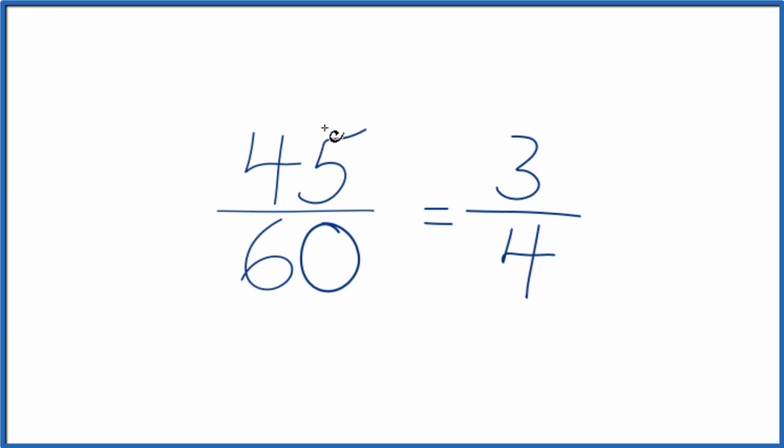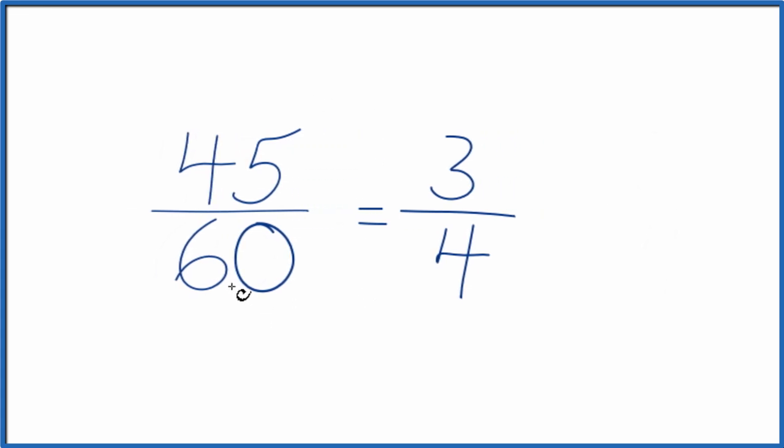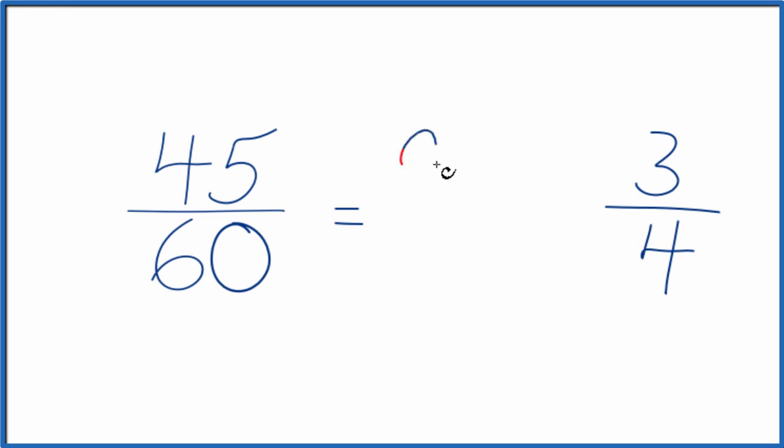And if you didn't know that 15 went into 45 evenly and 60 evenly, you could divide 45 by 5 and then 60 by 5. 45 divided by 5 is 9 and 60 divided by 5 is 12. And then 3 goes into 9 three times and 3 goes into 12 four times. So you could have had this intermediary step if you wanted to do that as well.